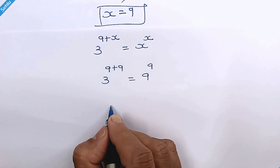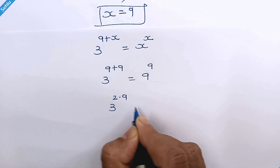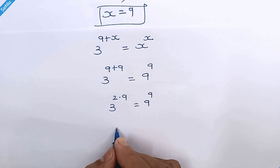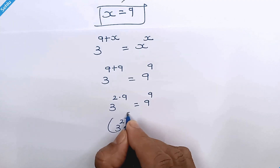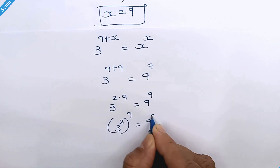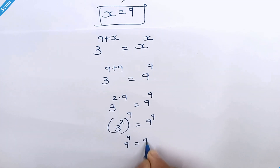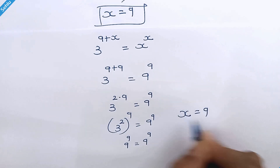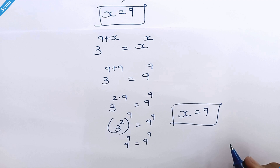Here we have 2 times 9 in the exponent, so it will be 3 raised to 2 times 9. This part can be written as 3 squared, whole raised to 9. Since 3 squared is 9, we have 9 raised to 9 is equal to 9 raised to 9. So x is equal to 9 is the right answer. Thanks for watching.